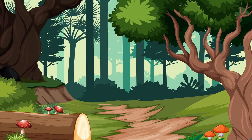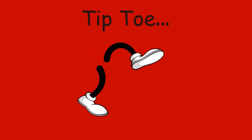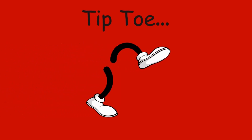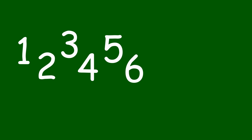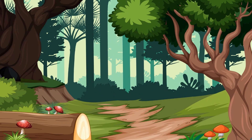We're going on a nature walk, you and me. We're going on a nature walk. What animals will we see? Oh, look. There's an owl. Shh. Tiptoe quietly. Let's not wake him up. Tiptoe. Let's count. One, two, three, four, five, six, seven, eight, nine, ten.